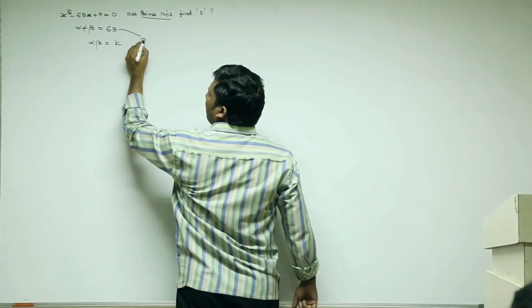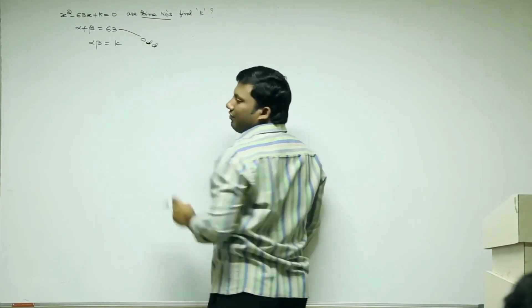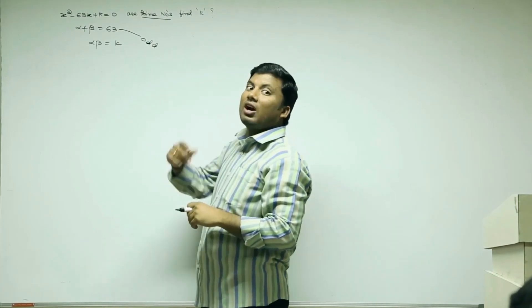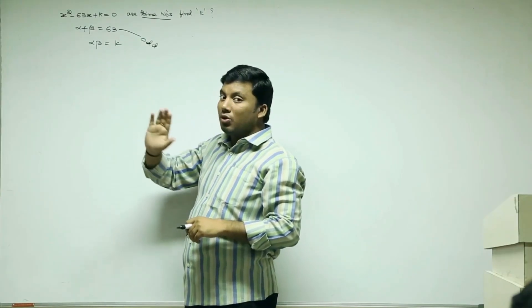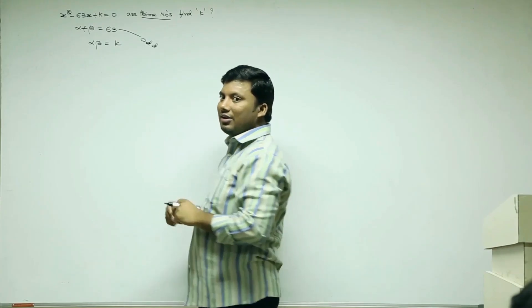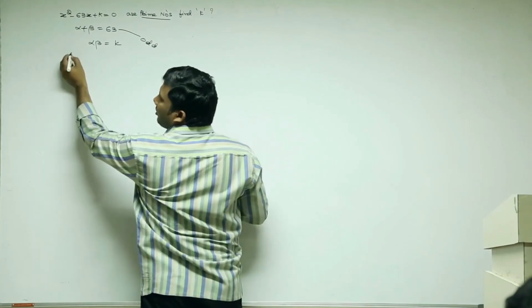63 is an odd number. If I take alpha and beta to be prime numbers which are odd, what is odd plus odd? Even. But it is odd. That means both cannot be odd. One has to be even and another has to be odd.